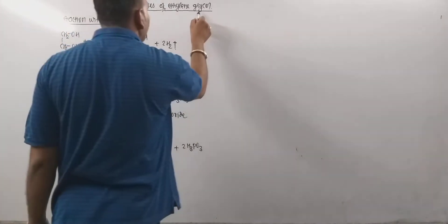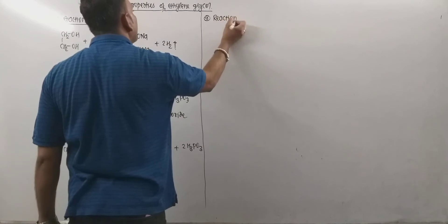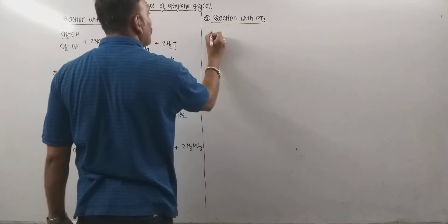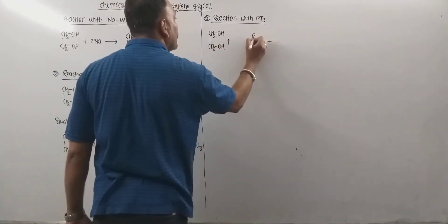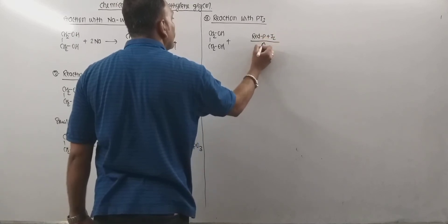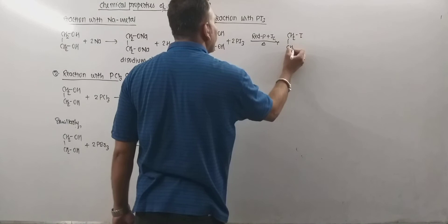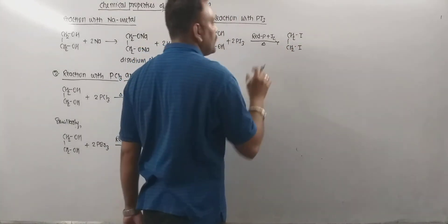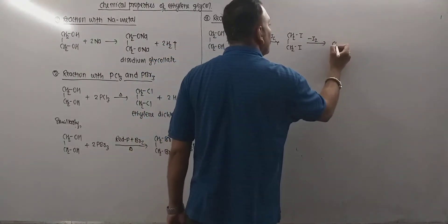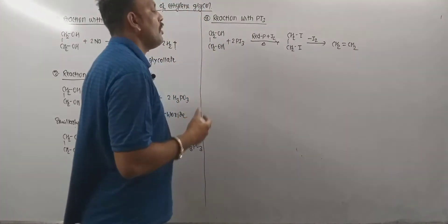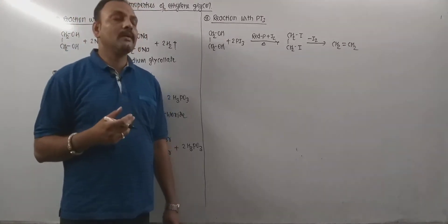Now let's discuss the reaction with PI₃. PI₃ also needs to be prepared indirectly — ethylene glycol is heated with a mixture of red phosphorus and iodine. This mixture provides PI₃, and the OH groups get replaced by iodine to form ethylene diiodide. However, since the size of iodine is larger, due to repulsion the iodine departs, and this leads to the formation of ethylene as the net product.